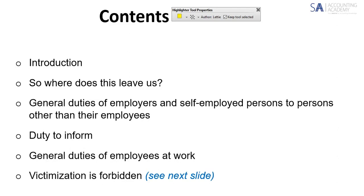Employees are expected to carry out any lawful order given to them, obey the health and safety rules and procedures laid down by the employer, and where any situation is unsafe or unhealthy and comes to their attention, they must report it to the employer or to the health and safety representative, who will then report it on to the employer. In many cases, that reporting is precisely where the victimization comes in — and on the next slide we see specifically why victimization is forbidden.